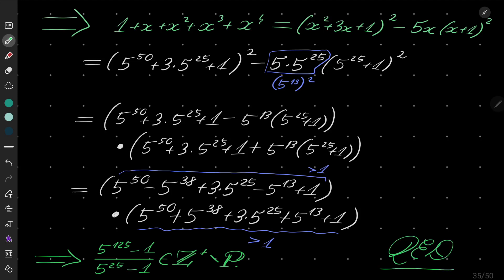Pretty tricky problem. The key was the factorization. If you want to know more about it, I will provide a link in the description — there is a well-written article on Wikipedia about these types of factorizations, so you may wish to take a look. Thank you for watching, and I will see you next time. Goodbye.